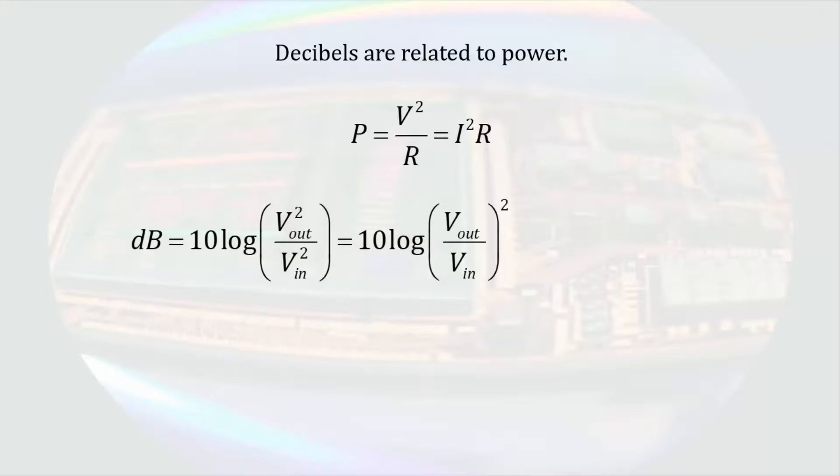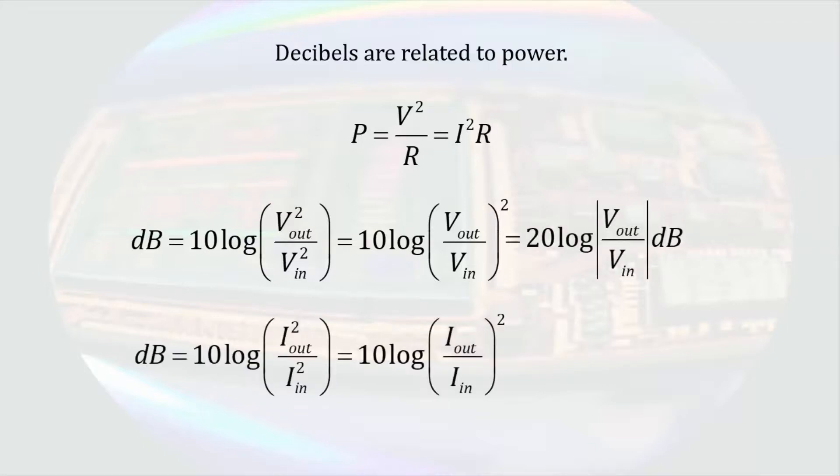Decibels are related to power. Most often when we are dealing with circuits, we are first interested in voltages and currents. However, the power in resistive circuits is related to the square of the voltage or current. If we do a decibel conversion of the ratio of the output power to the input power, we would take the ratio of the square of the output voltage to the square of the input voltage. That would be the same as taking the square of the ratio. The same thing applies to decibel gains of currents.